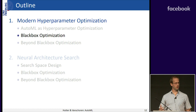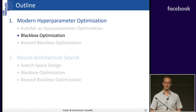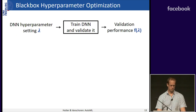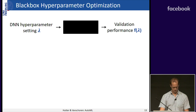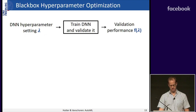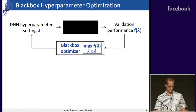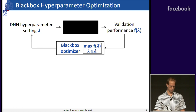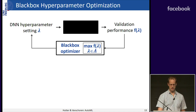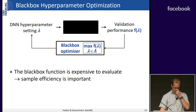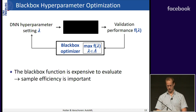Hyperparameter optimization with this general notion of what constitutes a hyperparameter is a pretty powerful beast. For black-box optimization, you have a black box that trains a deep neural network and validates it, and you seek the input lambda that maximizes validation accuracy. You throw away all information about what happens inside the black box, but this gives a generic interface for all kinds of problems. The black-box function is expensive to evaluate, so sample efficiency is important.